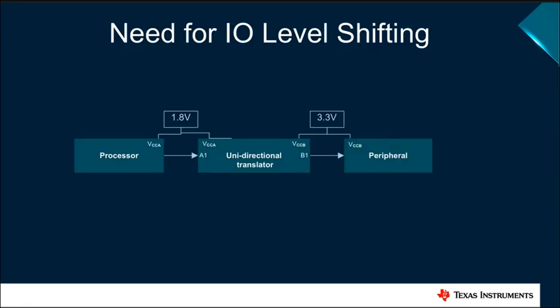In today's complex systems with multiple operating voltage nodes, there is often a need to shift IO levels between devices that operate on different voltage nodes. The most common example is the communication between a processor and a peripheral device that operate on two different voltage nodes, such as 3.3 volt and 1.8 volt, as shown here.